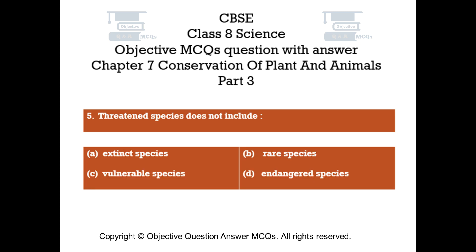Question number 5. Threatened species does not include: Option A - Extinct species. Option B - Rare species. Option C - Vulnerable species. Option D - Endangered species.